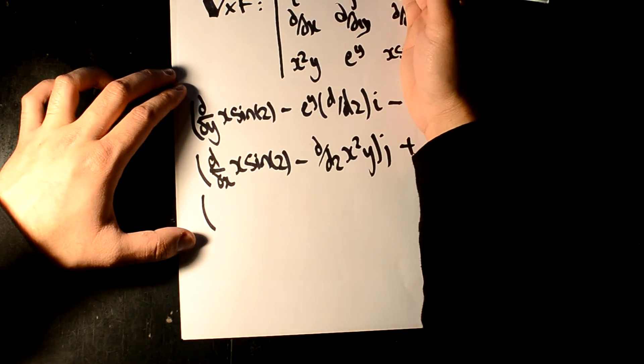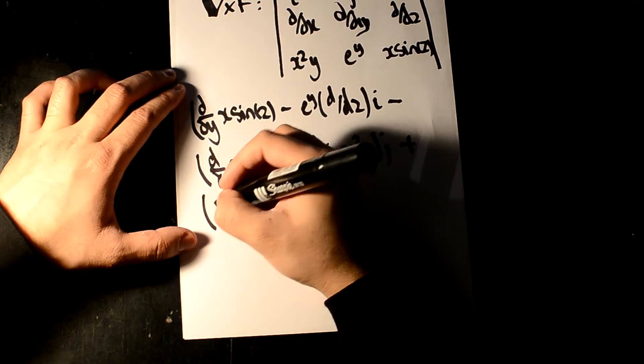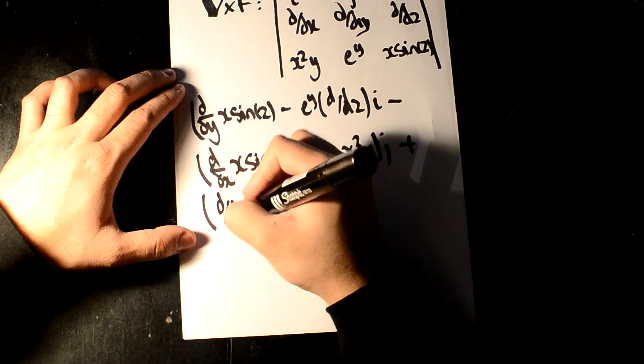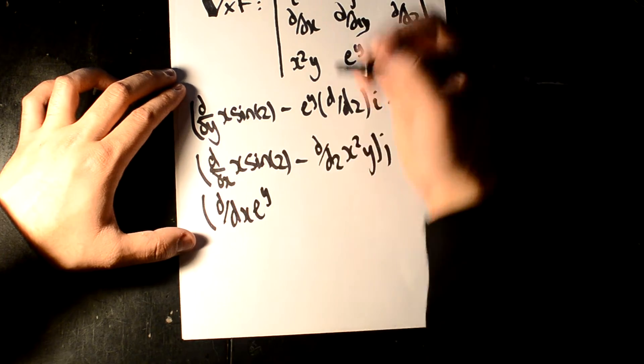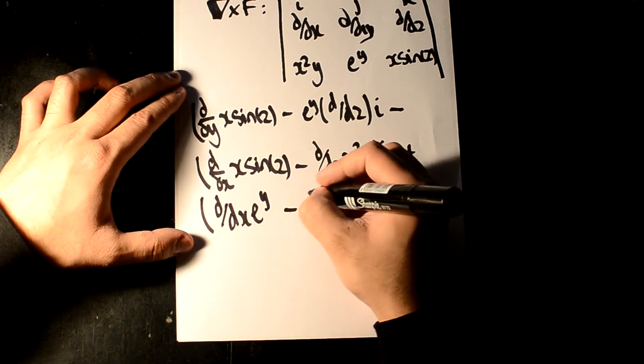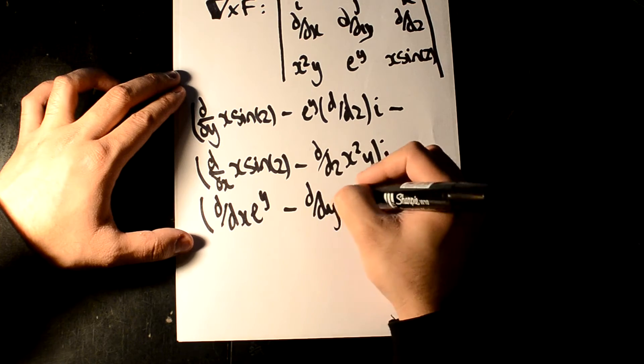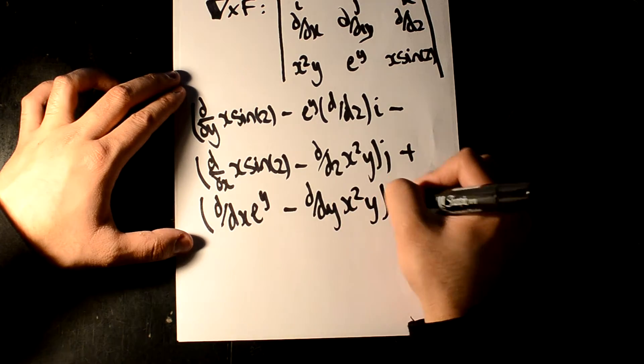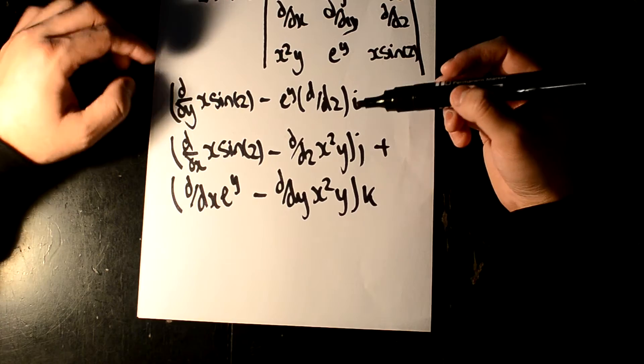Plus, cover this term, and you get d over dx, e to the y, minus d over dy, x squared y. So there we go. We now have three little parts.